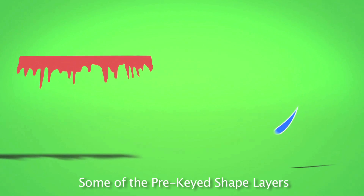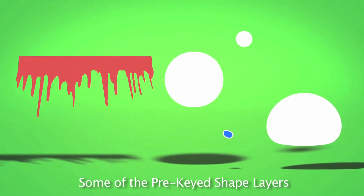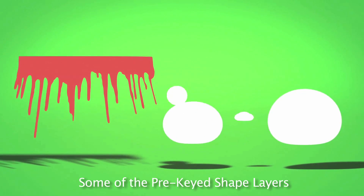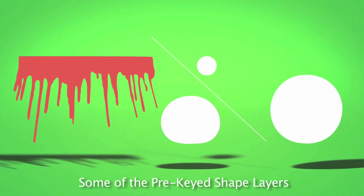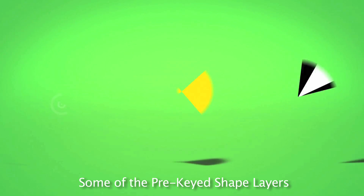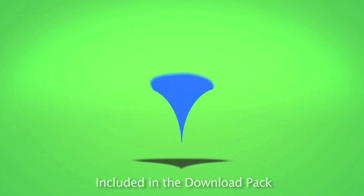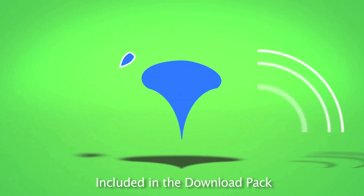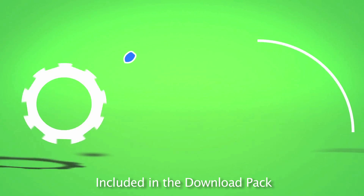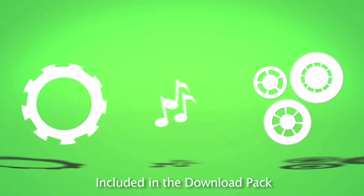It also comes with a cool pack of shape layers and these are things that are pre-keyed. You throw them in your videos or you put a blending mode on them and you just put them anywhere and you can be creative with these. They're really cool and really high quality so they'll work for 4K projects.